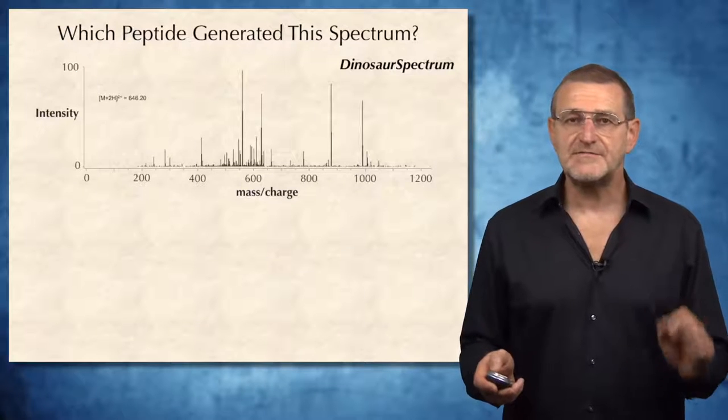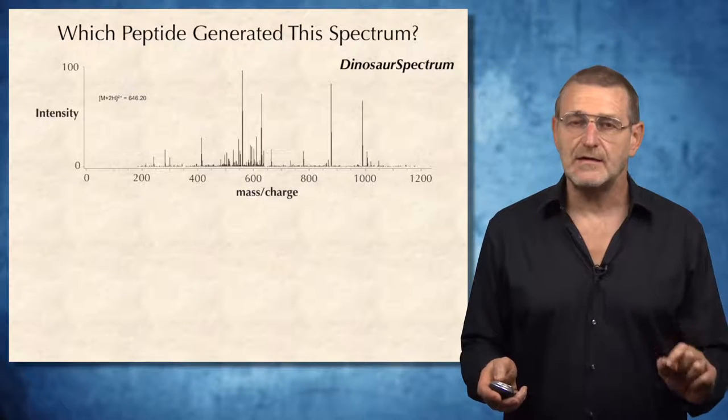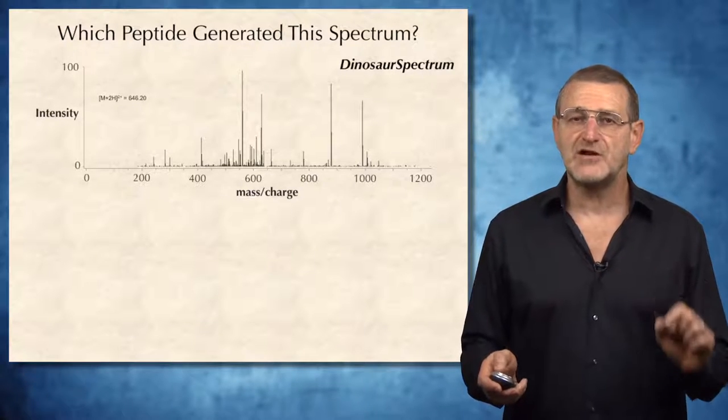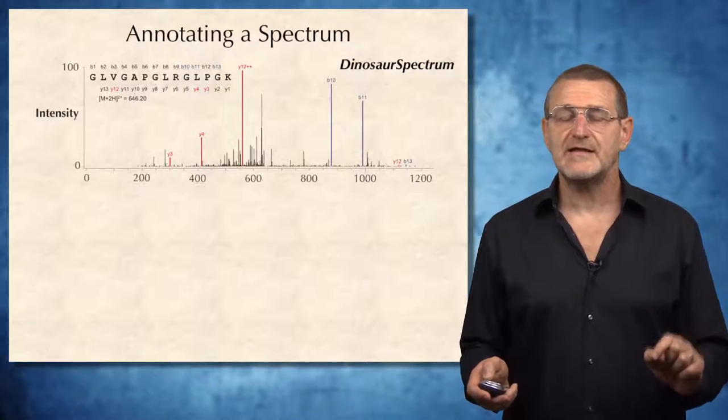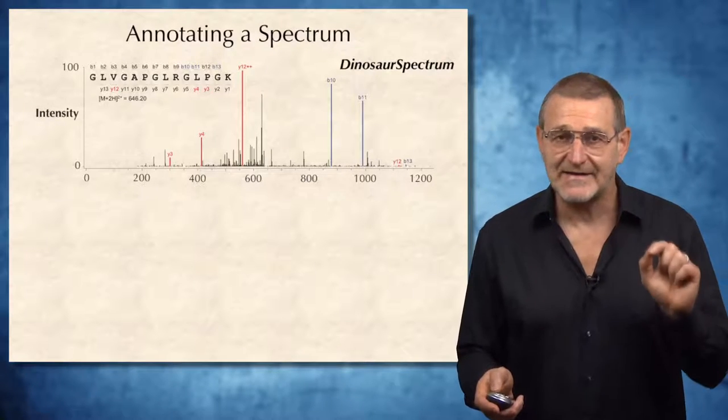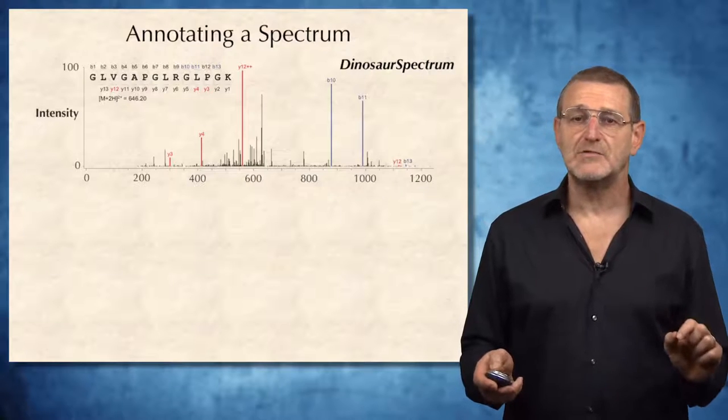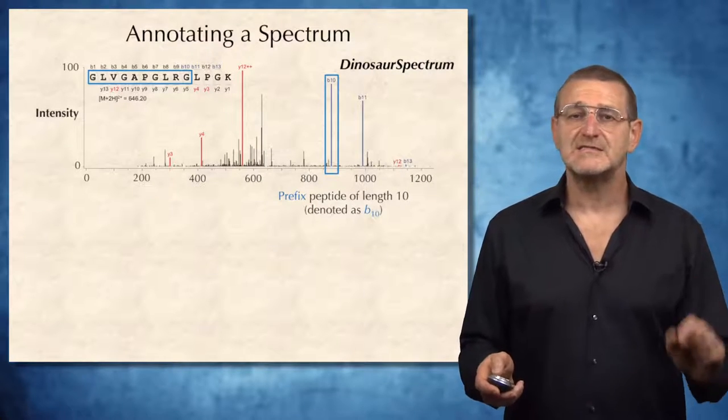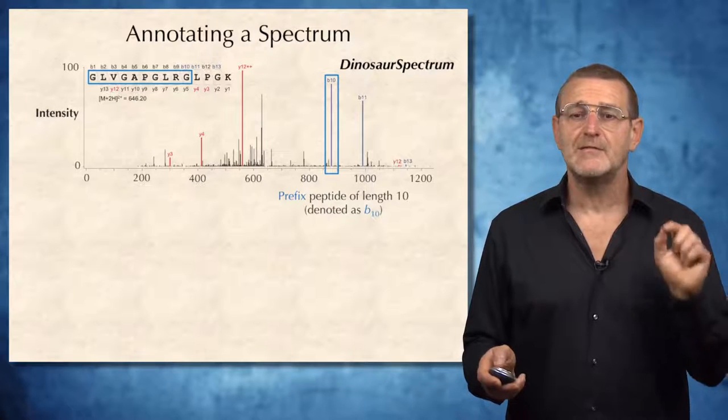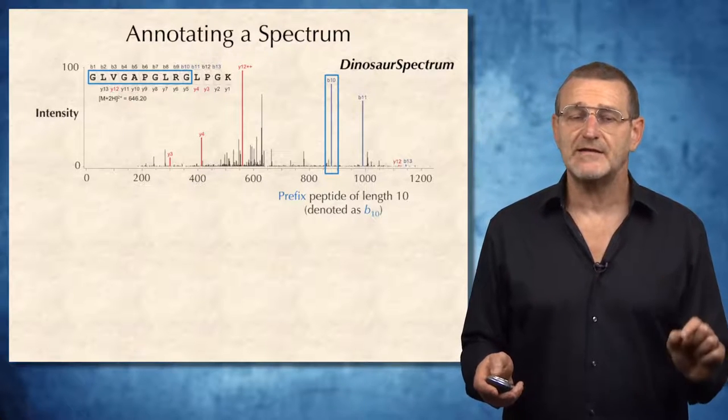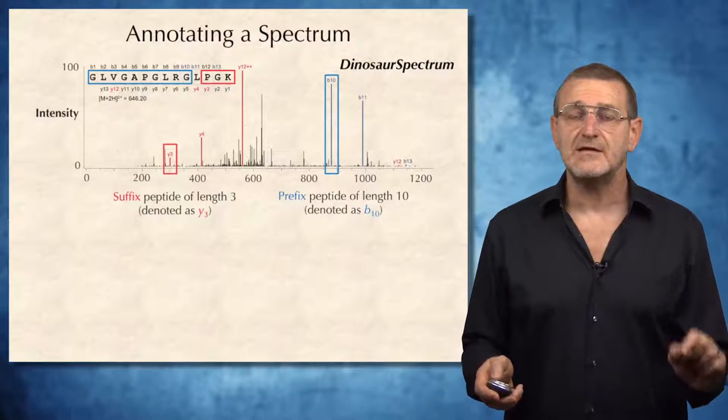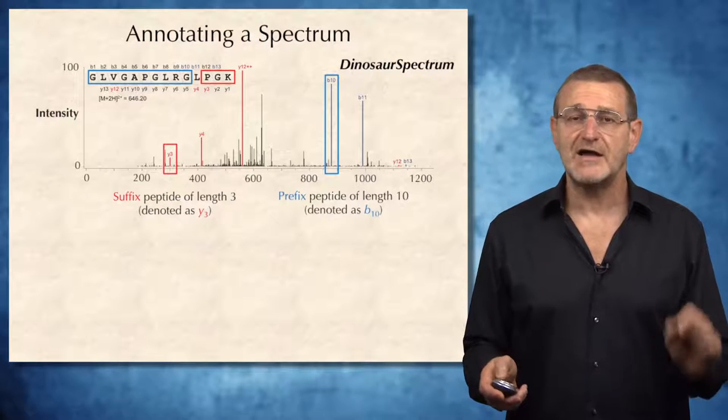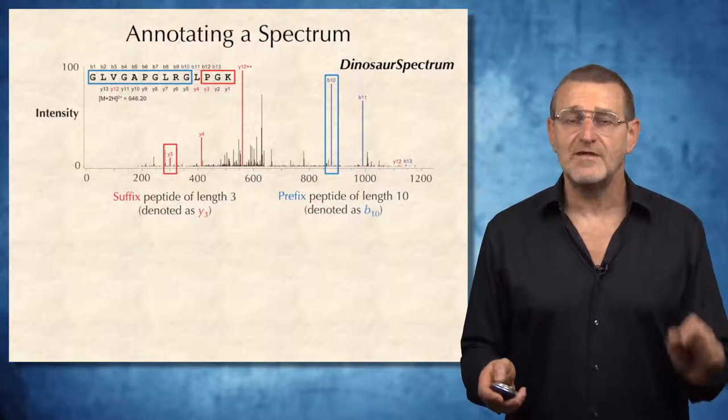As soon as we come up with an idea of how the peptides that generated this spectrum looks like, we can immediately start annotating peaks in this spectrum. For example, this peak has the mass explained by a prefix peptide of length 10, while this peak has mass explained by a suffix peptide of length 3.